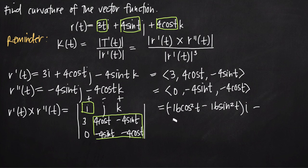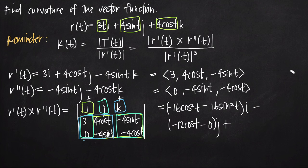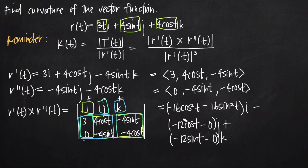For j, we always subtract. Looking at everything outside j's row and column: 3 times negative 4cos(t) is negative 12cos(t), minus 0 times negative 4sin(t), which is 0. So we subtract negative 12cos(t) times j. For k, we add: 3 times negative 4sin(t) is negative 12sin(t), minus 0 times 4cos(t), which is 0. So we add negative 12sin(t) times k.